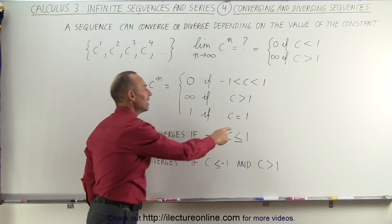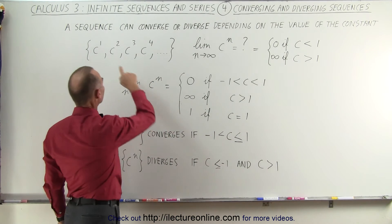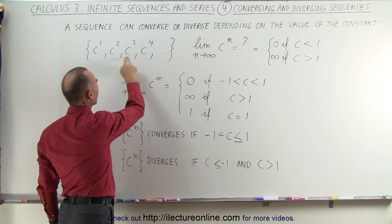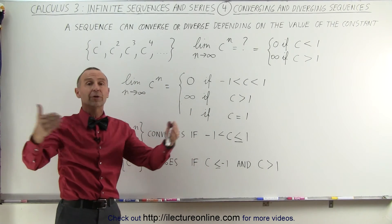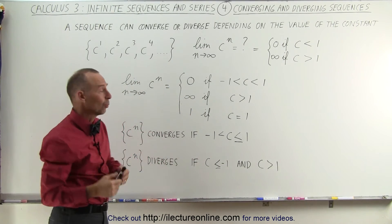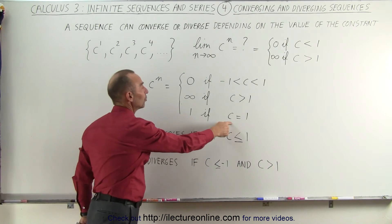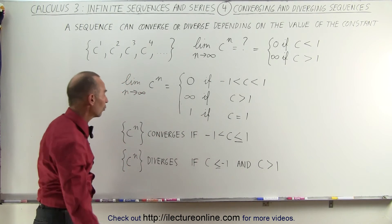So what if c is equal to 1? Well 1 to the first power, 1 to the second power, 1 to the third power, all those will be equal to 1, so therefore the series converges immediately to 1 and stays at 1. So again if c equals 1 we can see that it converges as well.